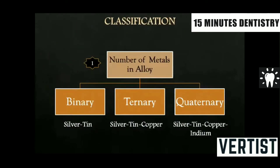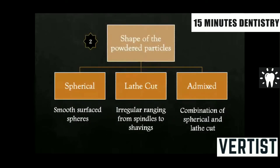Coming to the classification of amalgam, there are six classifications. First is based on the number of metals present in the alloy — it can be binary, ternary, or quaternary. The second classification is based on the shape of the powdered particles: we have spherical particles, lathe-cut particles, and admix, which is a combination of both spherical and lathe-cut.